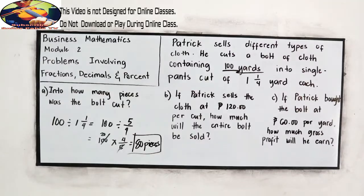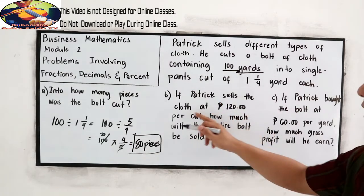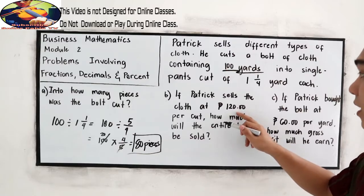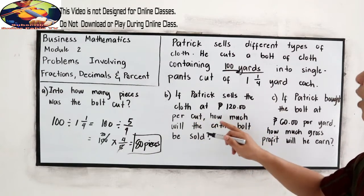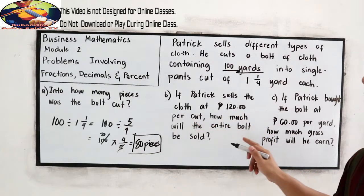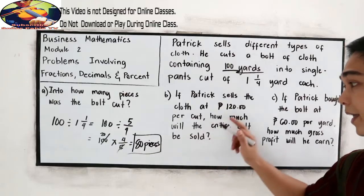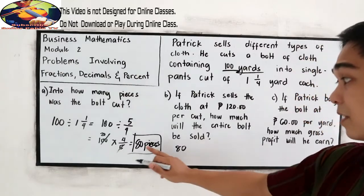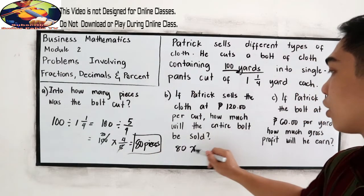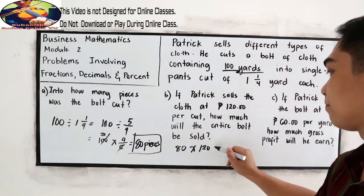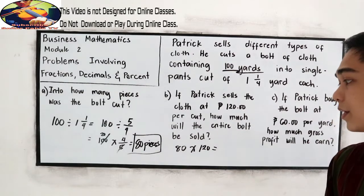Now, if Patrick sells the cloth at 120 pesos per cut, how much will the entire bolt be sold? We multiply 80 pieces times 120.